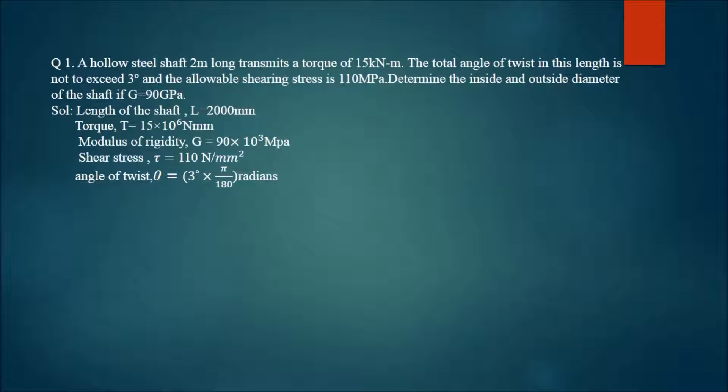Determine the inside and outside diameter of the shaft if G (modulus of rigidity) is 90 GPa. You can write down the given data as I have already done. I will be waiting until you note down the question as well as the given data.